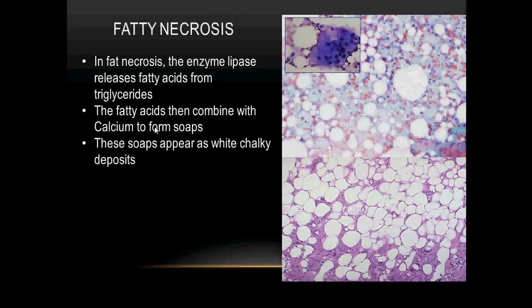Next up, fatty necrosis. In fatty necrosis, the enzyme lipase releases fatty acids from triglycerides. We know that triglycerides are made up of three fatty acids and one glycerol. The fatty acids then combine with calcium to form soaps, and these soaps appear as white chalky deposits as you can see in the two figures here.